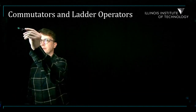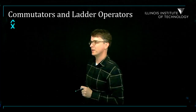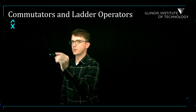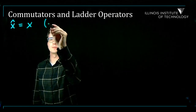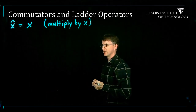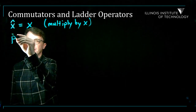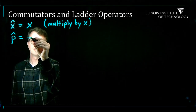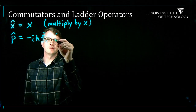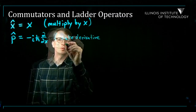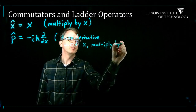Let me remind you of some of the operators we've learned so far. X-hat — the hat denotes an operator, which is just a set of instructions. X-hat simply means multiply by x, so x-hat acting on some function just means multiply that function by x. We've also learned the momentum operator: p-hat equals minus i h-bar d by dx, meaning take the derivative with respect to x and multiply by minus i h-bar.